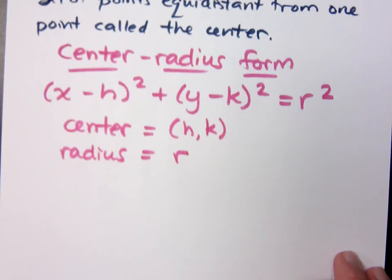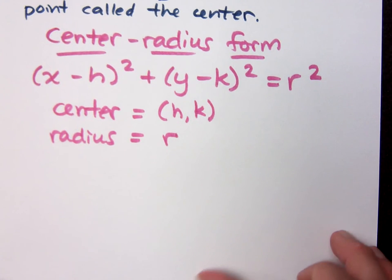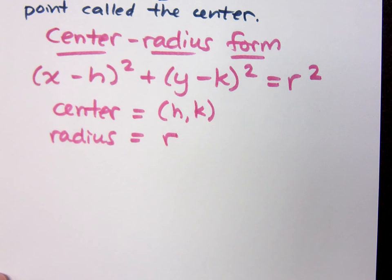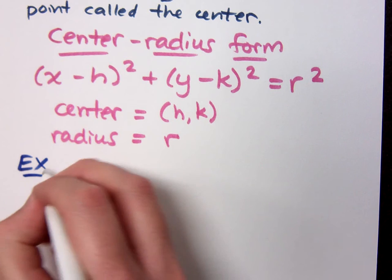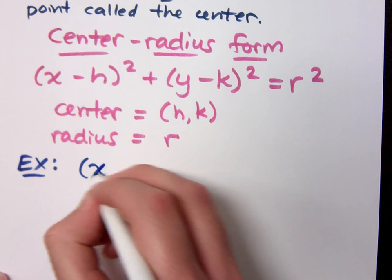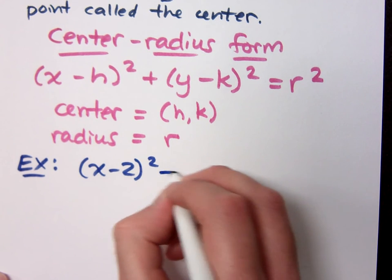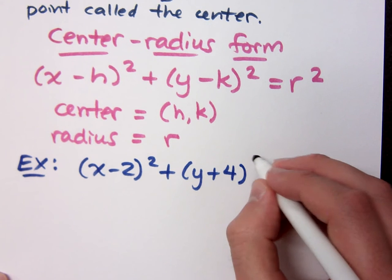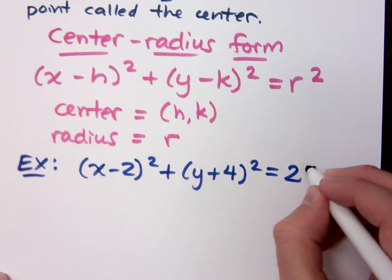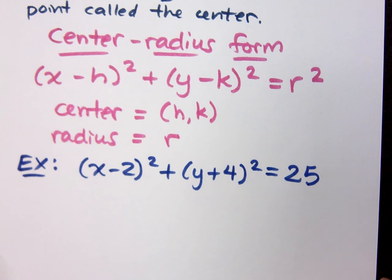Now, let me show you how we go about working with circles. For example, if I have (x - 2)² + (y + 4)² = 25. Your job right now is just to identify the center and the radius based off of the form that I've given you.